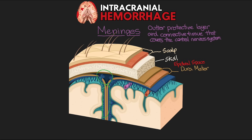Moving lower, the dura mater normally sits against the next layer of the meninges. There is another potential space here — it doesn't normally exist but has the potential to allow blood to create a pocket — called the subdural space. We also have bridging veins, which drain blood from the underlying brain tissue into the dura mater, and these veins cross this potential space.